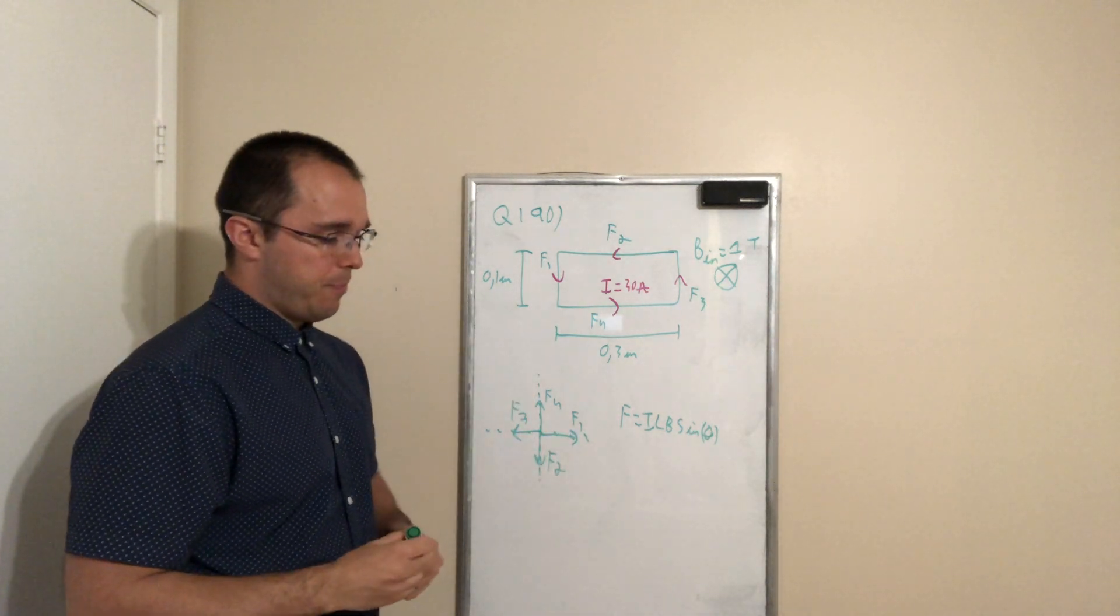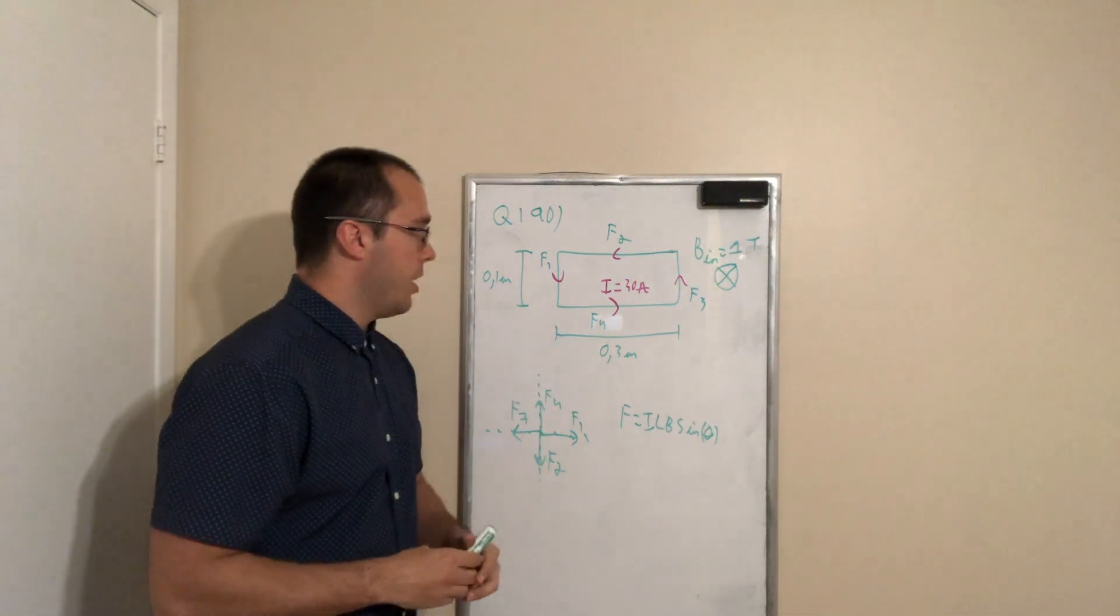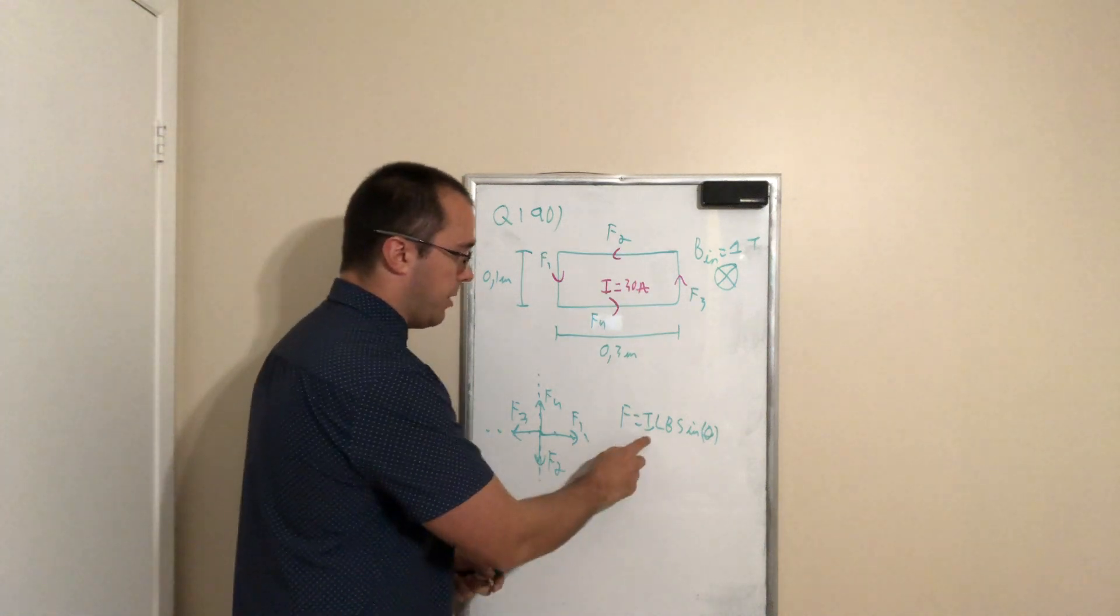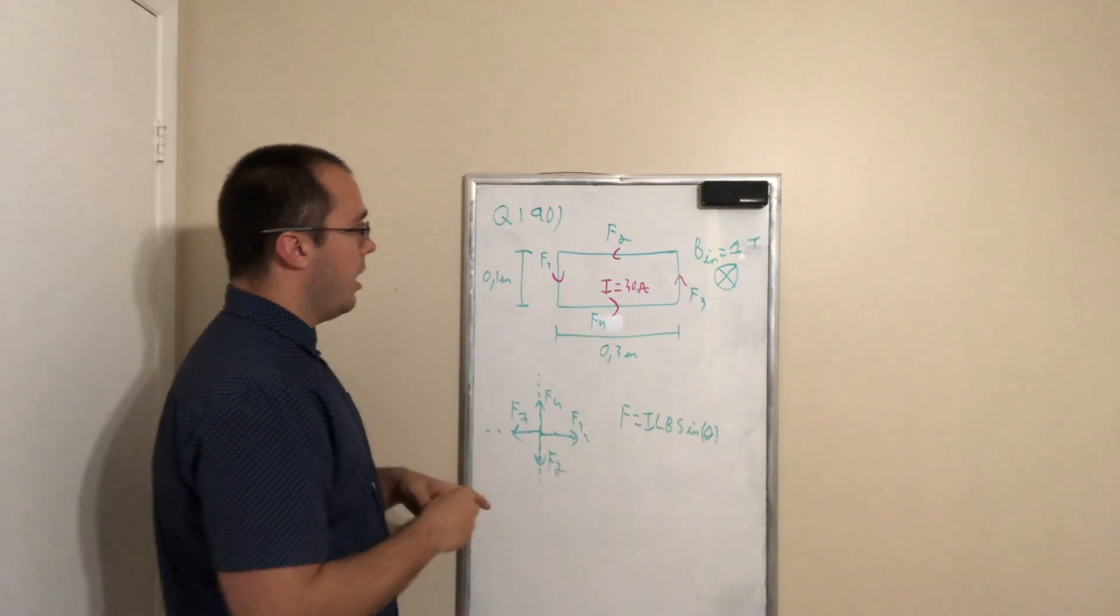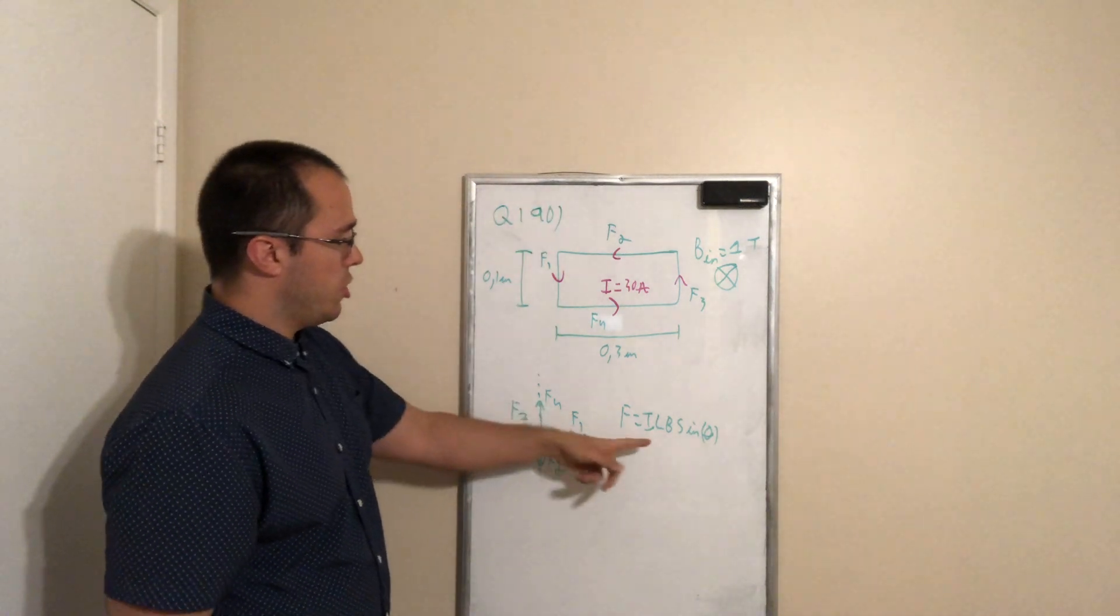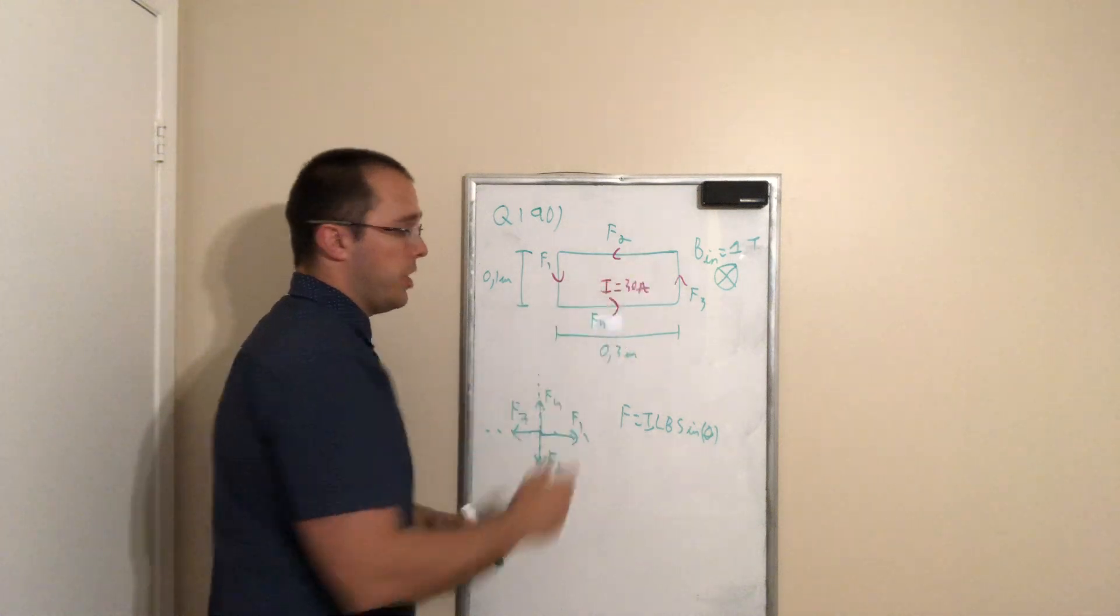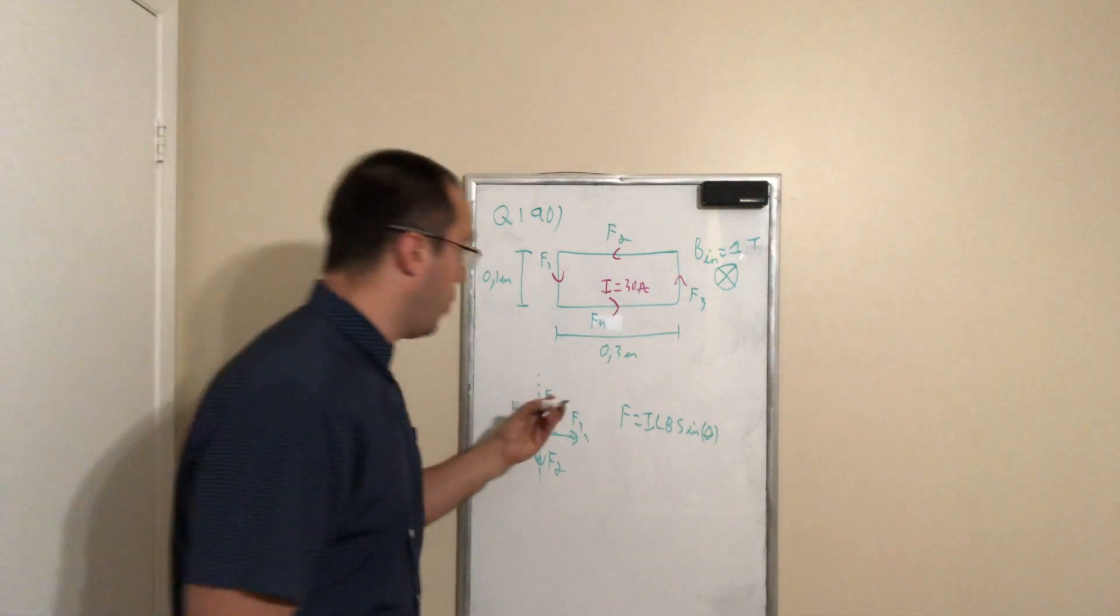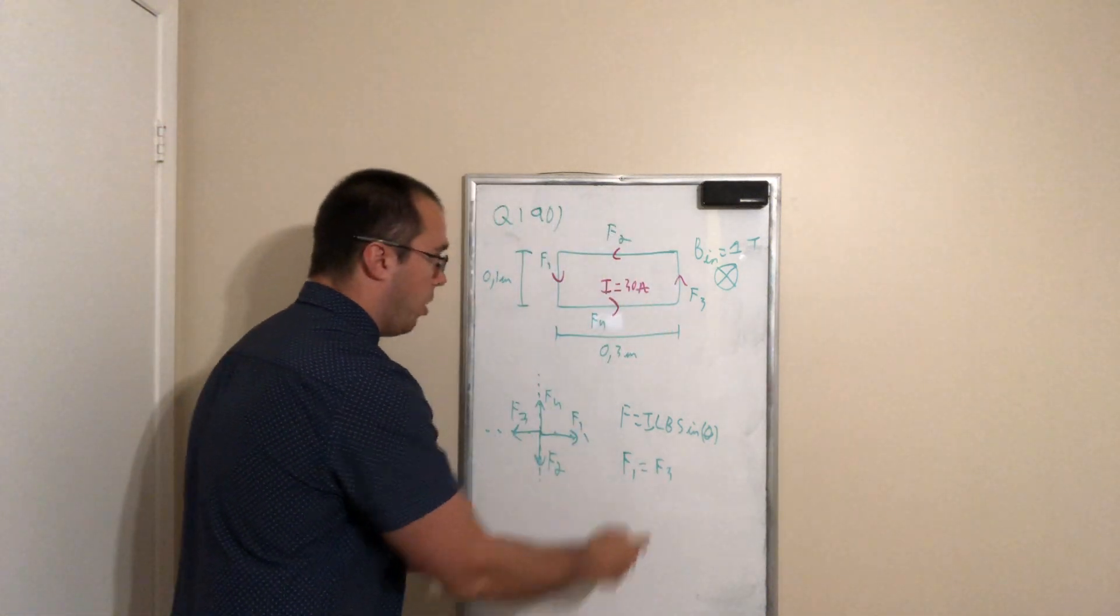There's an interesting detail that happened here. If we look, all the forces are subject to the same current and the same magnetic field. And F2 and F4 share the same length. F1 and F3 share the same length also. So what we see right away is F1 and F3 are equal.